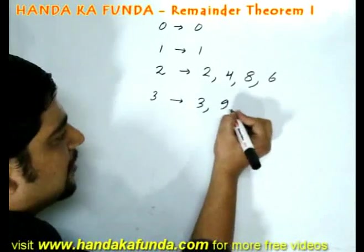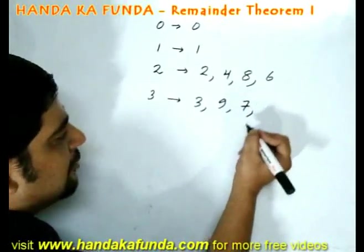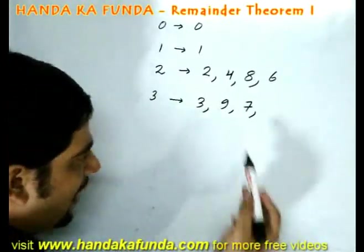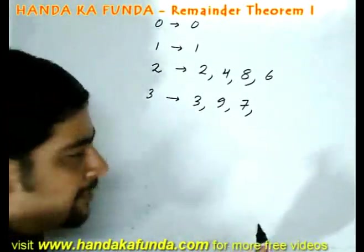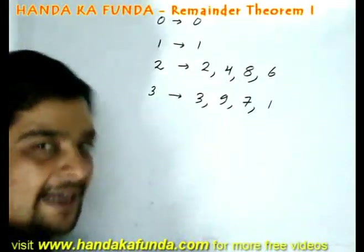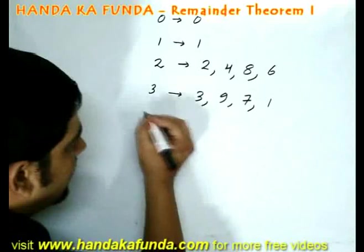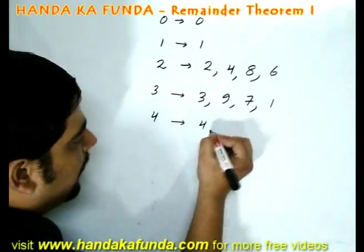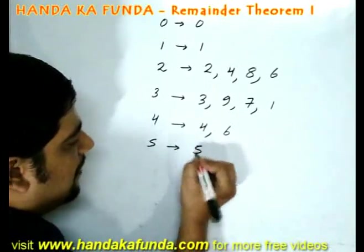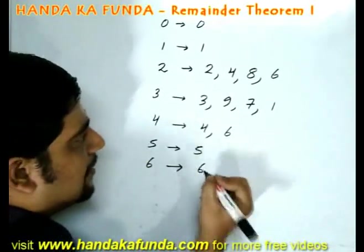3, 3 into 3 is 9, 9 into 3 is 27, 27 into 3 is 81. So I can do either 27 into 3 is 81 and get 1, or I can simply do 7 into 3 is 21 and I will still get the same value. 4 will be 4, 4 square is 16, and again 6 into 4 is 24. 5 will always be 5. 6 will always be 6.